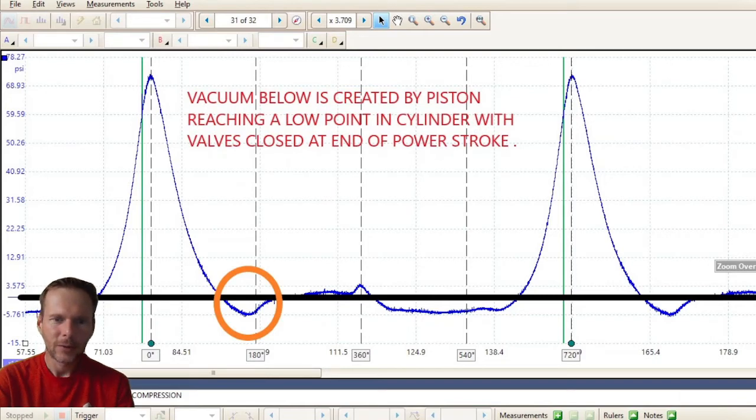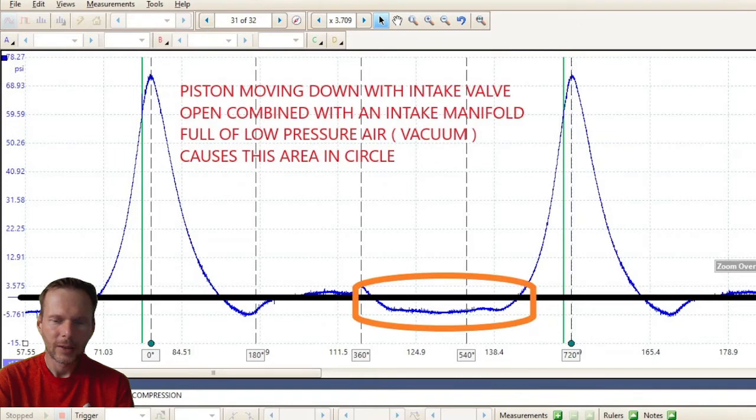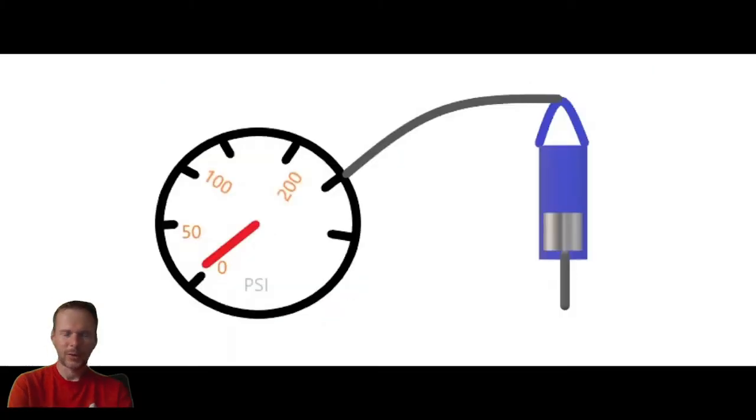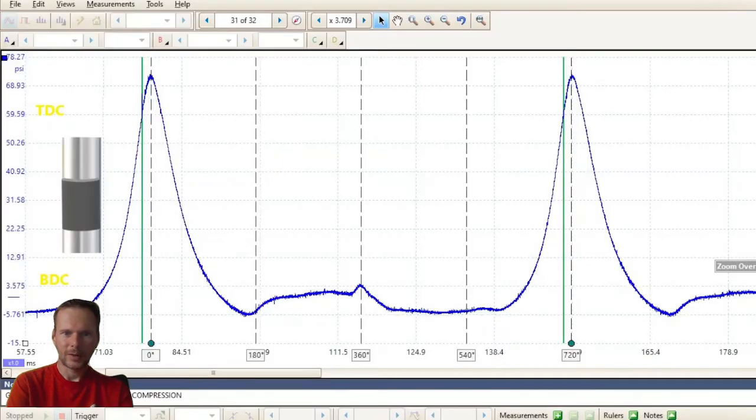So that's vacuum right there. That's vacuum. I drew a picture of a piston there. And that piston is about halfway up the cylinder. TDC is the top, obviously. BDC is bottom dead center.